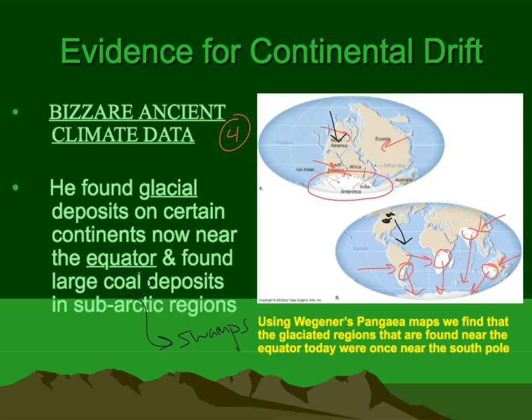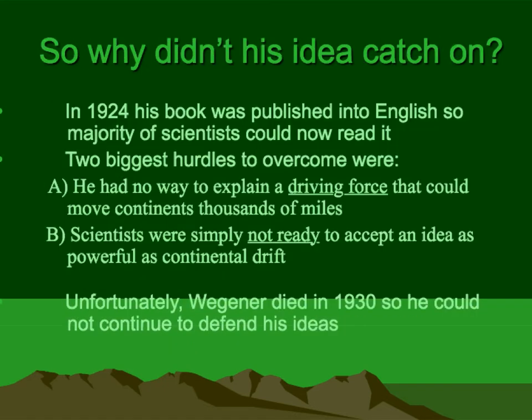So that's a brief overview of the four lines of evidence. Review them: one, the jigsaw puzzle; two, fossils matching up; three, rock types matching up; and four, ancient climate data that seems out of place, but if you shift the continents, you can account for it.